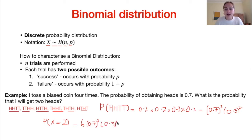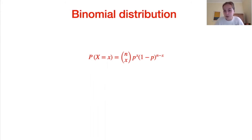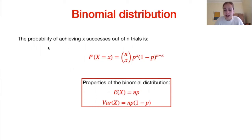Instead of reasoning through each case, there's an easy formula for the probability of x successes out of n trials: P(X = x) = n choose x times p to the power of x times (1 minus p) to the power of (n minus x), i.e. the number of failures. Two important properties of the binomial distribution: the expected value is n times p, and the variance is n times p times (1 minus p).